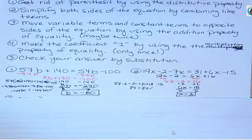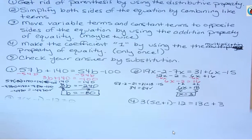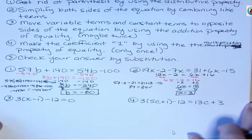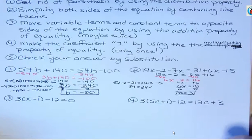So in the first one we used steps 3, 4, and 5. In the second one we used steps 2, 3, 4, and 5. And now we're going to look at some that require getting rid of parentheses by distributing.